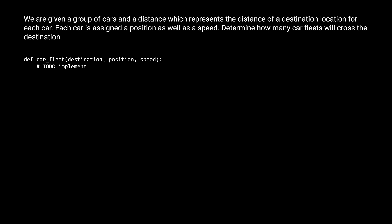Before we dive into the solution, let's look at what the solution function signature looks like. There are three variables: destination, position, and speed. There are also some constraints. First, all positions are going to be before the destination, meaning all cars start behind the destination at T0. Second, all positions are unique. And third, the length of the position and speed arrays are the same, so every car is given a speed.